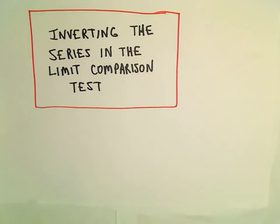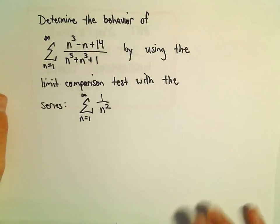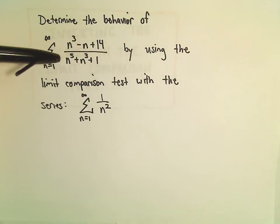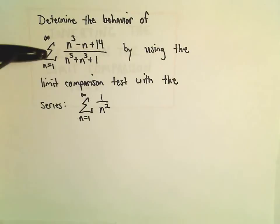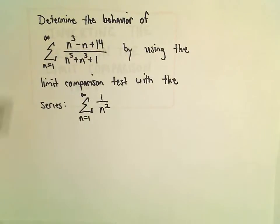Some more examples here using the limit comparison test, and this is kind of similar to what we've been doing. So here we're going to use the limit comparison test on the series n equals 1 to infinity of n cubed minus n plus 14 over n to the 5th plus n to the 3rd plus 1 by comparing it to the series 1 over n squared.